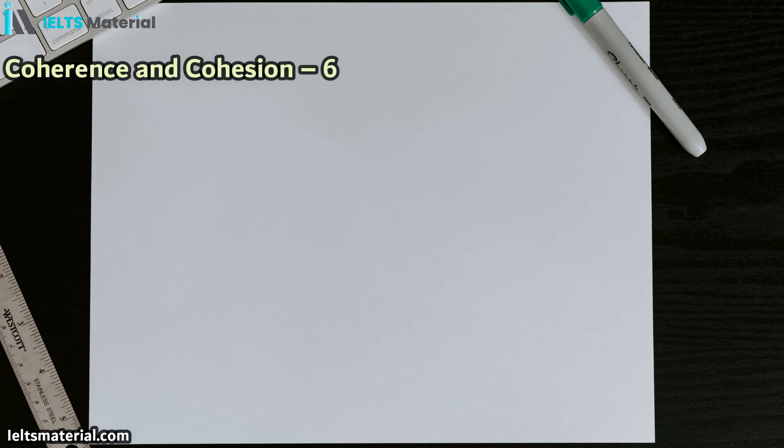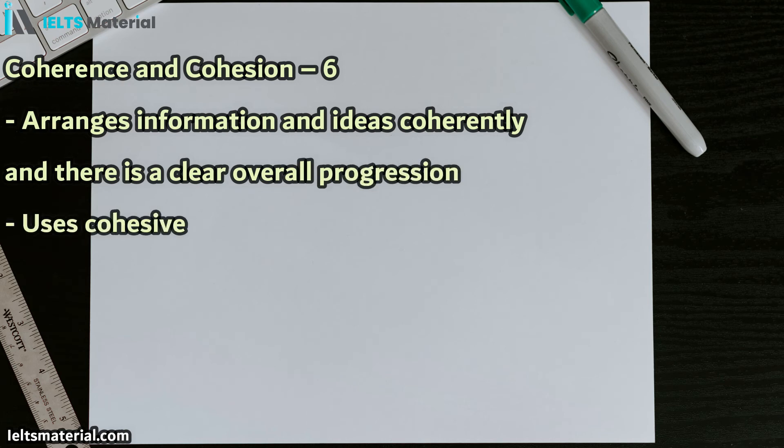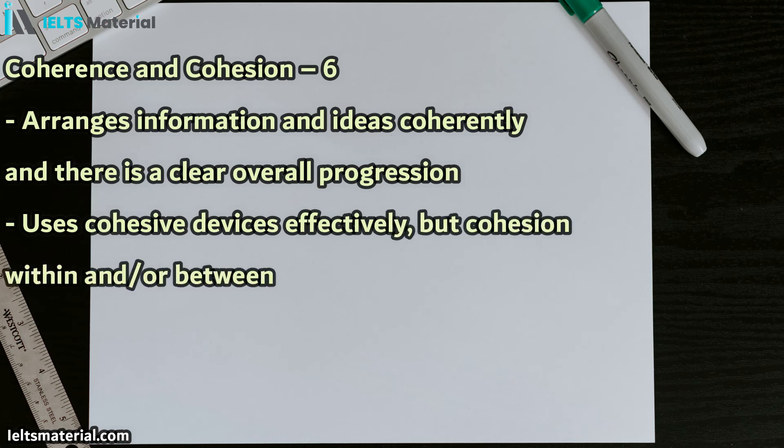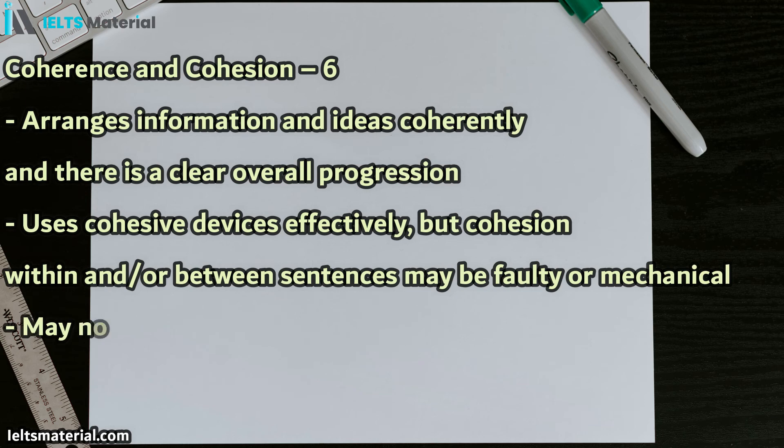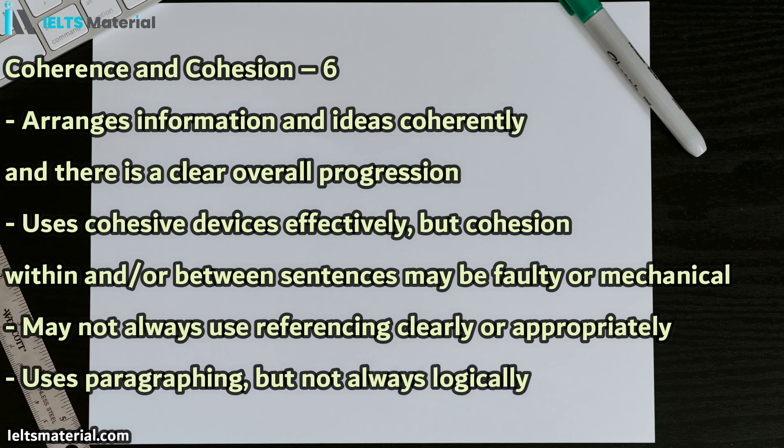Now let's move on to talk about coherence and cohesion. This is the same for both tasks and academic and general. Basically, you arrange information and ideas coherently, and there's a clear overall progression. So you'll see more about this because you use cohesive devices effectively, but there may be some lack of cohesion between sentences, and it might be a bit mechanical. This means using but all the time, or so all the time. And you may not always use referencing clearly or appropriately. So this is when you refer back to a past idea, often using a pronoun like he or it. And most important is using paragraphing, but not always logically. So you do use paragraphing, but not always logically. And you need to get all of these points to get a band 6 here.